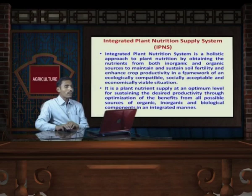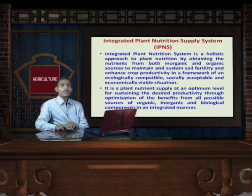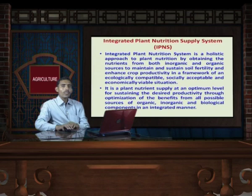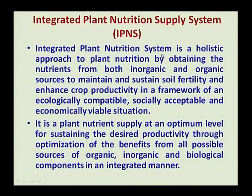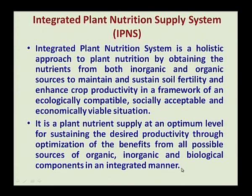Now we talk about the integrated plant nutrition supply system. We have talked about different sources of organic manures and different types of nutrient sources. Integrated nutrient supply system includes all types of nutrient sources, and the combination of different sources makes this concept. Integrated plant nutrition system is a holistic approach to plant nutrition by obtaining nutrients from both inorganic and organic sources to maintain sustainable fertility and enhance crop productivity in an ecologically compatible, socially acceptable, and economically viable situation. It is the plant nutrient supply at an optimum level for sustaining desired productivity through optimization of benefits from all possible sources of organic, inorganic, and biological components in an integrated manner.